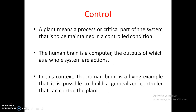Likewise, we can also construct our neural network such that we can have a generalized controller that can control our plant. It will take all inputs and give the necessary outputs or signals to perform some actions. We can definitely create a neural network that monitors a process or plant properly, because our brain is a live example. Neural networks are analogous to the human brain, so if the human brain can do it, we can also do it — with some difficulties, but we can.